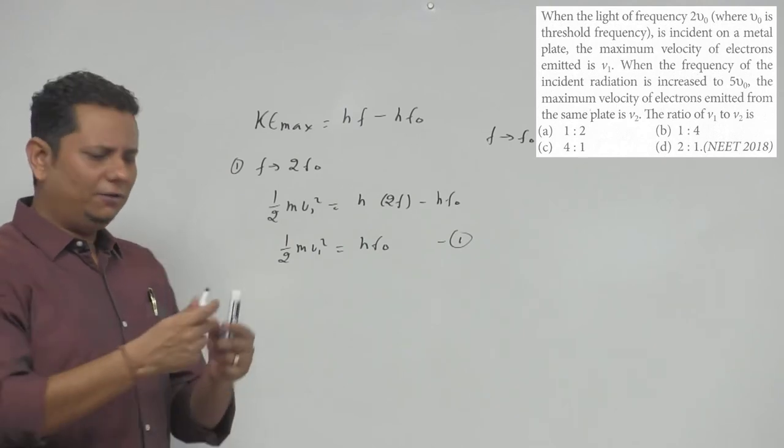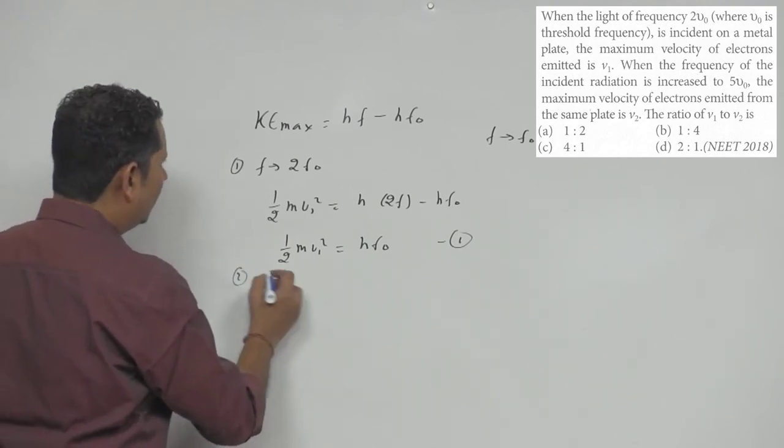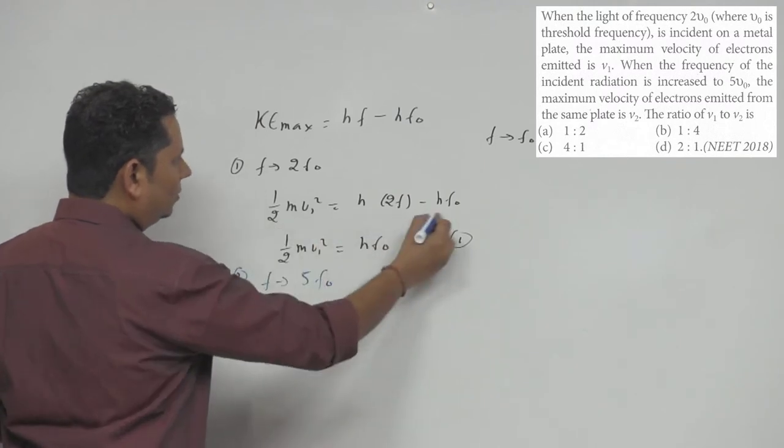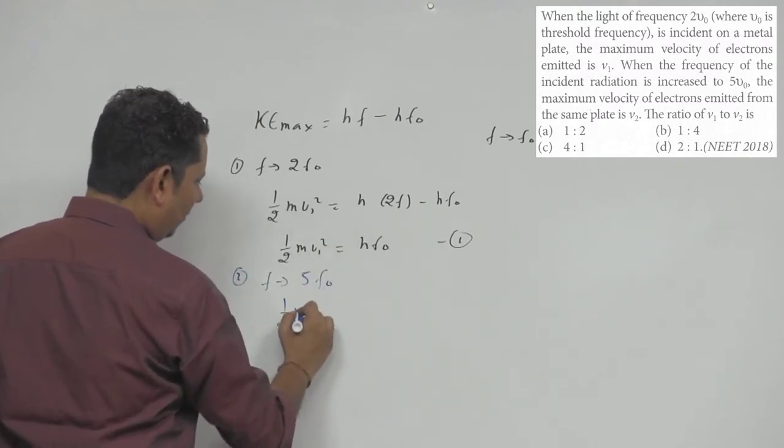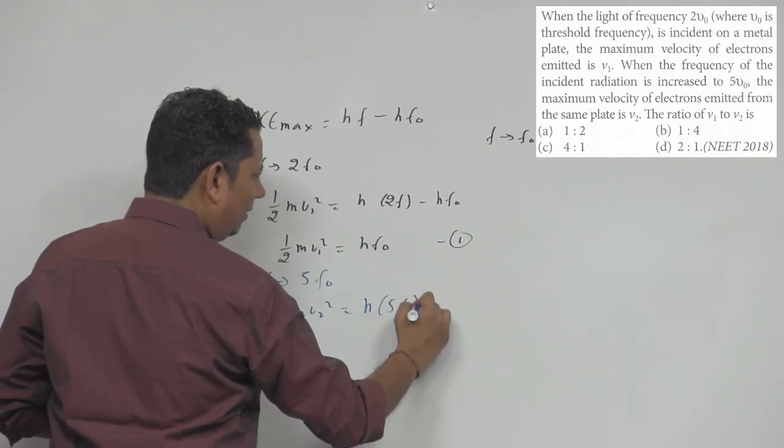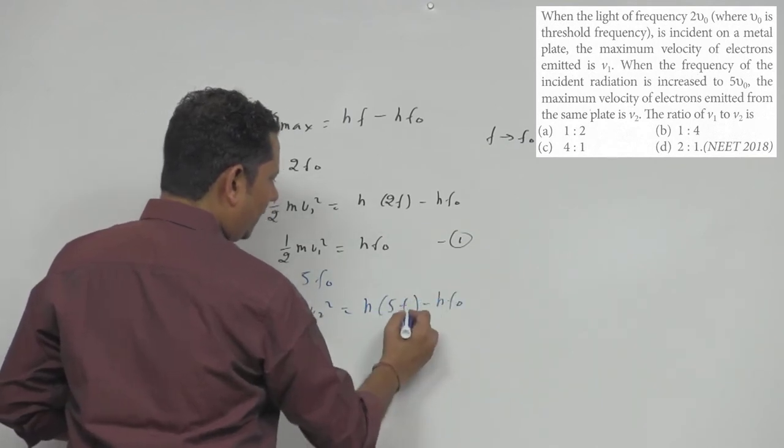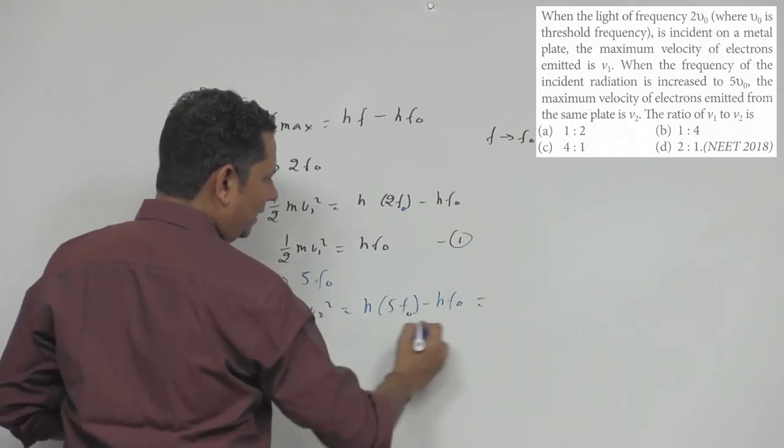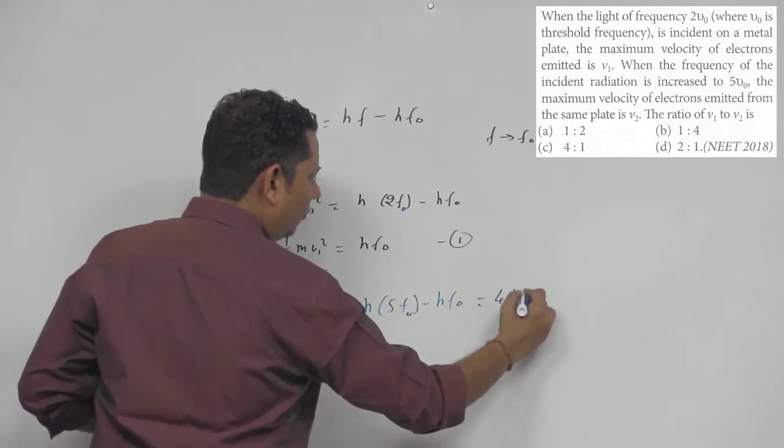The second time, the frequency we used is 5F₀. The second frequency is 5F₀. So in the same equation, we substitute this value: ½mV₂² will be equal to H multiplied by 5F₀ minus HF₀.